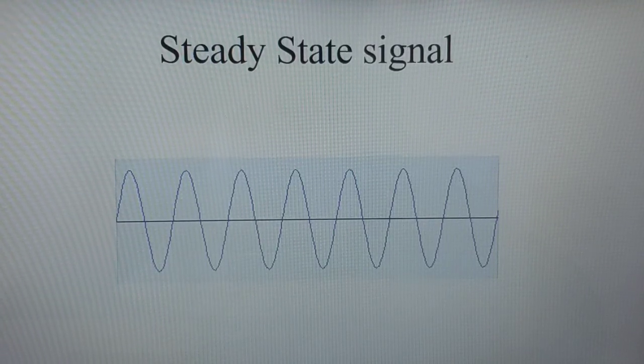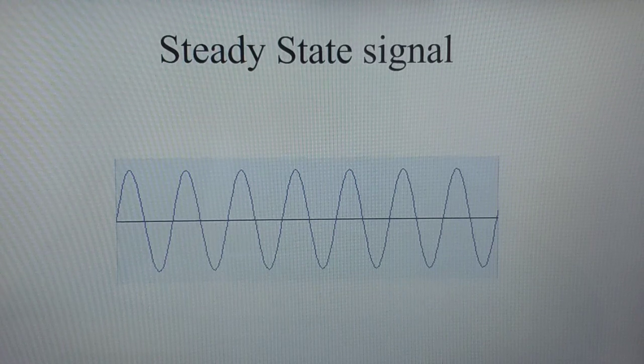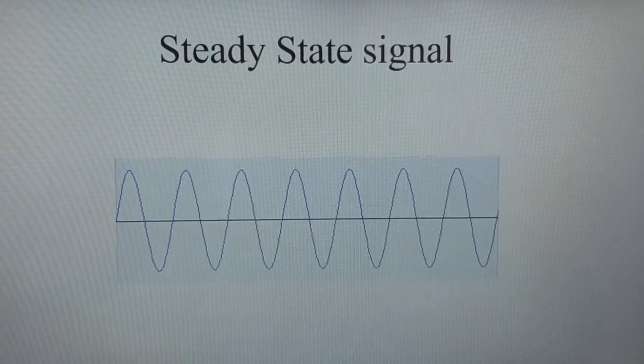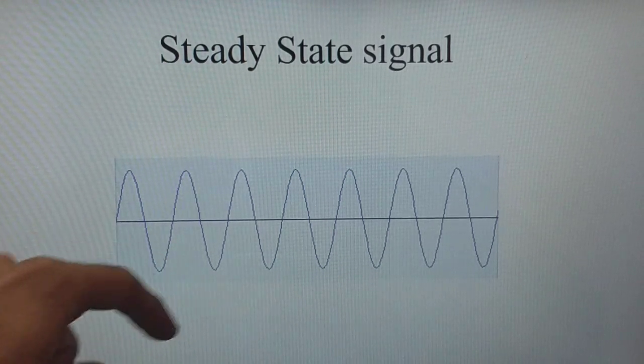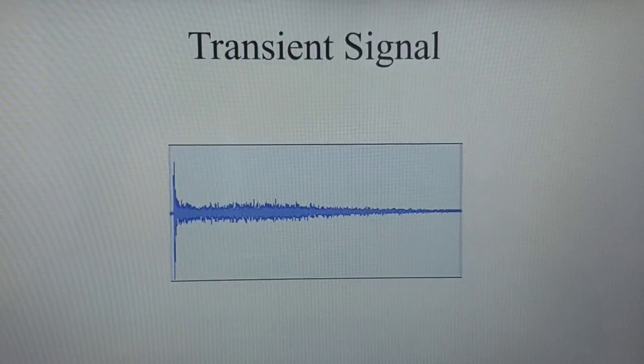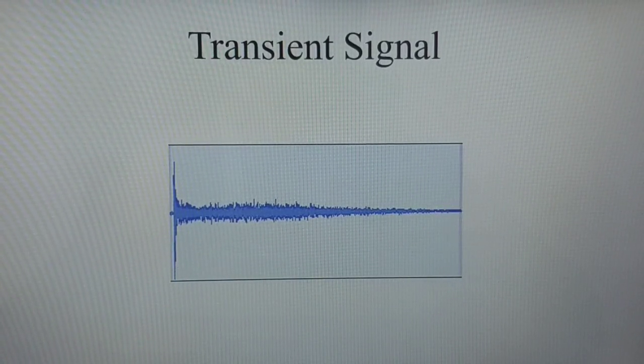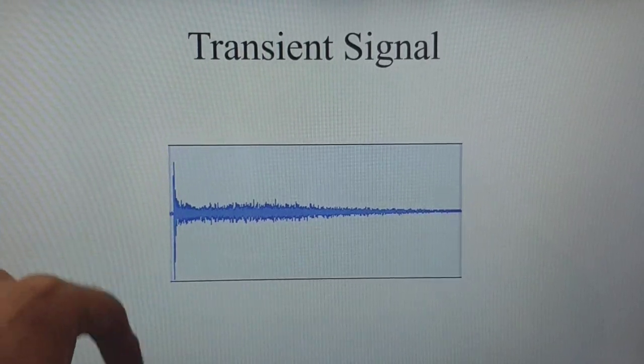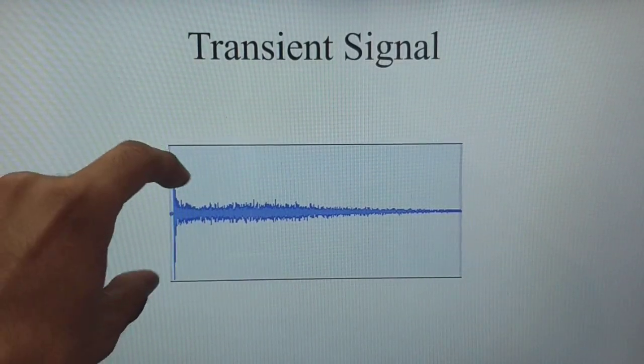This is a steady state sine wave with a frequency of 1 kHz. This is how the signal looks like. Look at the amplitude, it's not changing with respect to time. Now let's look at a transient signal. This is how a transient signal looks like. Look at the sudden impulsive amplitude, and it's dying down exponentially.